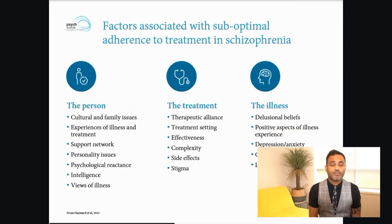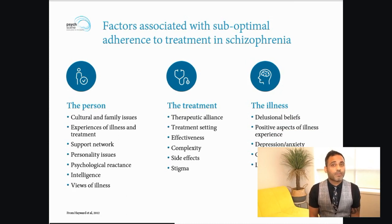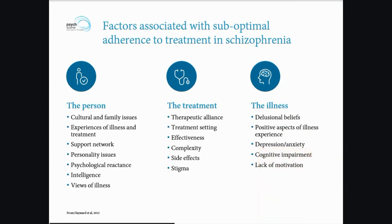One of the important aspects to take into account is compliance. Factors that affect compliance can be divided into three groups: patient factors, treatment factors, and illness factors. Patient factors include cultural and family issues, experiences of illness, support network, personality factors, and psychological reactance. Treatment factors include side effects from medication, complexity of taking medication, stigma, and non-effectiveness. Illness factors include delusions around medication or treatment provider, depression, nihilistic belief systems, lack of motivation, cognitive impairments, or forgetting to take medication.